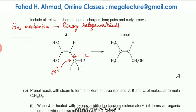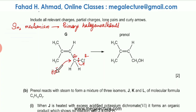The OH approaches the positive carbon atom as a nucleophile, attracted to the positive charge. It comes in with its electrons, the electrons on that side get repelled, and the Cl will eventually get knocked out.